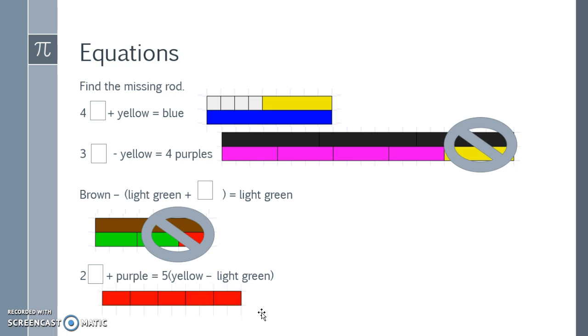That has to equal two of what plus a purple. So if I put my reds, my five copies of my reds down here and I put my purple on top, two of what would fill this area? Two light greens. So two light greens plus a purple is equal to five times or five copies of a yellow minus a light green.